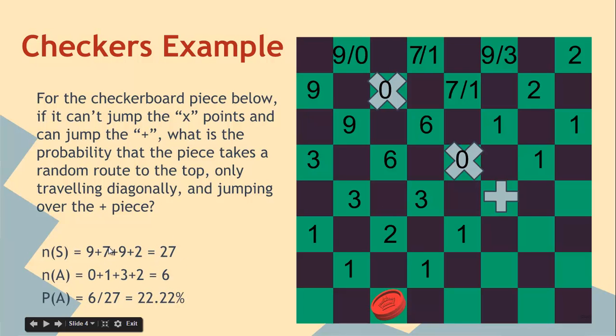So in total there are one plus three plus two. So the little dashes are the new numbers. We could put zeros on all of these to show that we can't go through any of these points. But we have to go through this one this way. So N of S is the 27. N of A is the 0, 1, 3, and 2. And so the probability of A is 22%. So the probability that you're going to go through the plus sign on a random route is 22%.